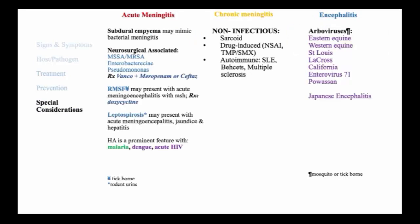Jumping to the arboviruses with encephalitis: there are many viruses transmitted through mosquito or tick exposure that are geographically distributed, including eastern and western equine encephalitis, St. Louis, La Crosse, California, enterovirus 71, and Powassan encephalitis. These and many others cause encephalitis usually in the late summer months with exposure to these insects. People traveling to the Far East are potentially at risk for Japanese encephalitis, usually in rural areas of China, and should receive vaccination prior to travel.